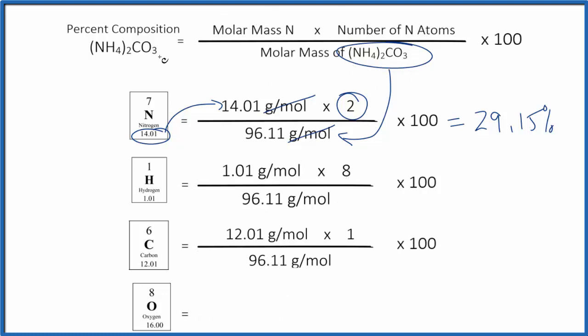For hydrogen, be careful because we have 2 times 4. That gives us 8. For carbon, we only have the 1 carbon. We end up with 8.41% for the hydrogen, and then for the percent composition of carbon in ammonium carbonate, we have 12.50.